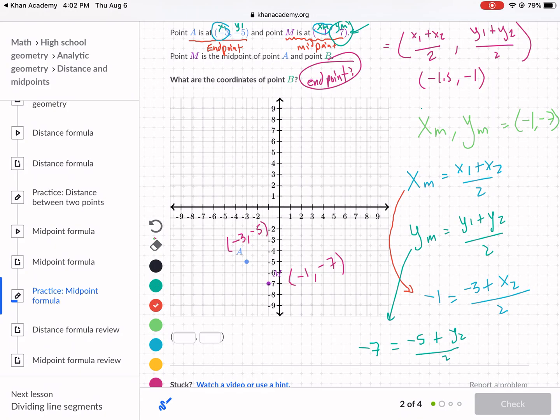Now it just becomes a matter of algebra and solving. The first thing I'm going to do is multiply both sides by 2 to get rid of the fraction. It cancels on the right, and we're left with negative 2 equals negative 3 plus X2. Then I add 3 to both sides to get X2 by itself, and I get 1 equals X2. So now I have the location of my X value for B. That is 1 comma something.